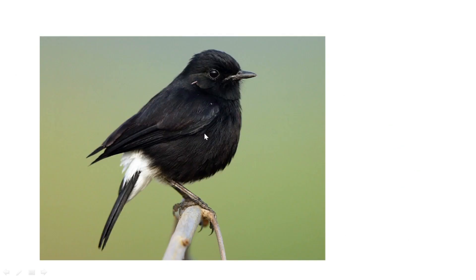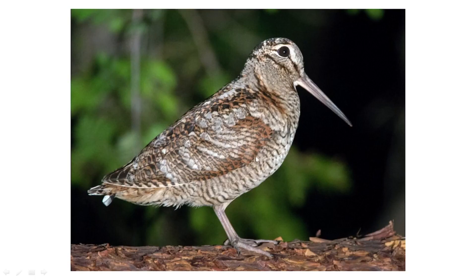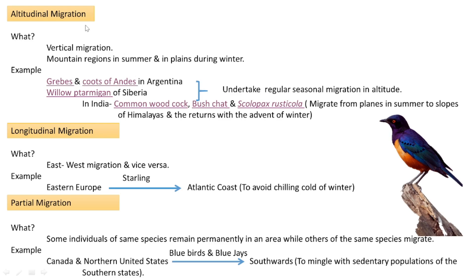Other Indian examples are bush chat and stonechat (Saxicola). They migrate from the plains to the slopes and valleys of the Himalayas, and with the advent of winter they return again to the plains. This is altitudinal migration.